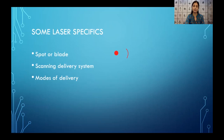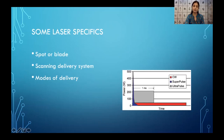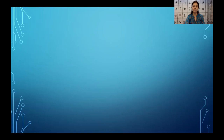A scanning delivery system means the laser beam scans along the entire length of the arc during a particular pulse. The different modes of delivery are the continuous mode, the superpulse mode, and the ultrapulse or pulsar mode.